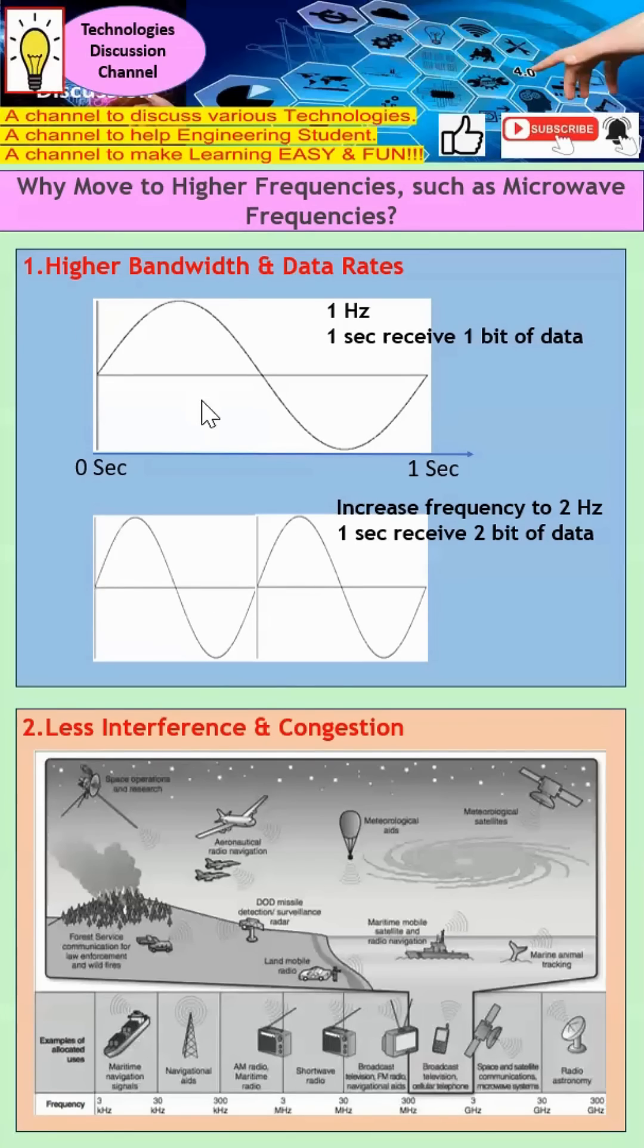Now imagine every sine wave, I actually receive one bit of data. So in one second, I receive one bit of data for 1Hz. However, for the case of 2Hz, you can see I actually receive one bit and then another bit. So at one second now, instead of one, I actually receive two bits of data for this 2Hz waveform.